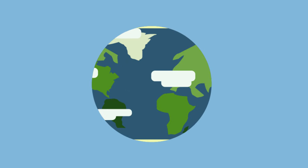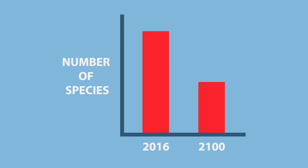Today many species are becoming extinct at an alarming rate. This is of great concern to biologists and ecologists. It is currently estimated that 50% of all living species will be extinct by the year 2100. But what can we do to slow down or halt the spiral of extinction?